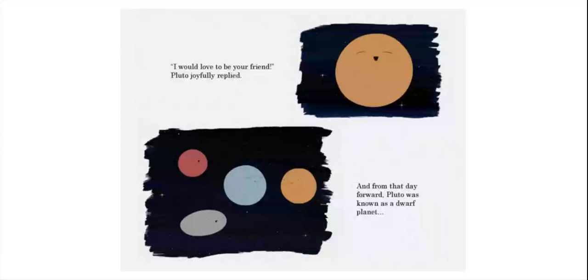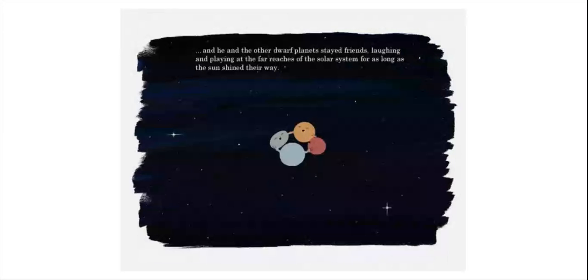And from that day forward, Pluto was known as a dwarf planet. And he and the other dwarf planets stayed friends, laughing and playing at the far reaches of the solar system for as long as the sun shined their way. The end.